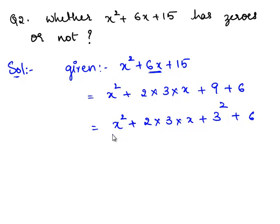Therefore, this expression is of the form a square plus 2ab plus b square. So this can be written as x plus 3 whole square plus 6.